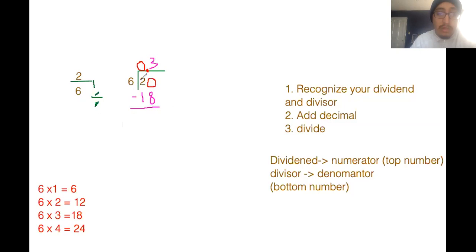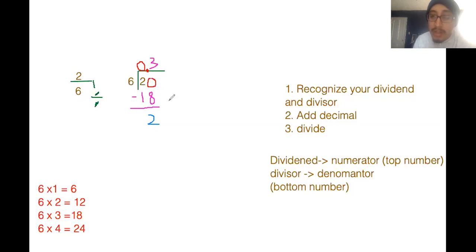Now we have to subtract. 20 minus 18 — what is 20 minus 18? It's actually going to be two. 20 minus 18 is two. Because if you go to the store and you give someone $20 when you bought $18 worth of stuff, you're going to get $2 back. Same thing here — 20 minus 18 is two.